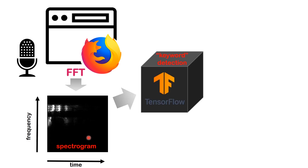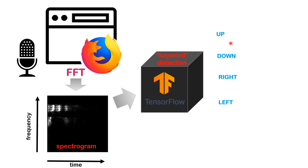What we're going to put the spectrogram into is something called a black box. In this case, the black box is a TensorFlow.js model that actually does keyword detection. This can detect four words as of now that it is trained upon. It recognizes: up, down, right, and left. So basically, you can control some kind of controller on the screen or something like that.